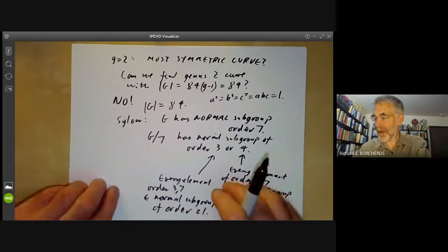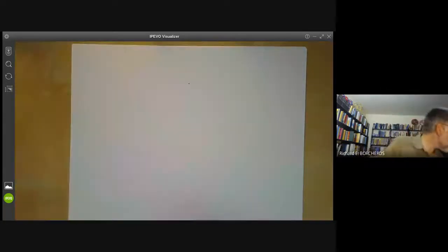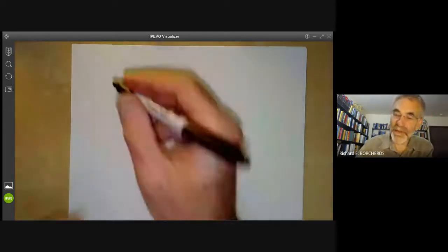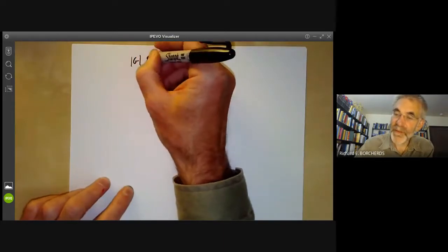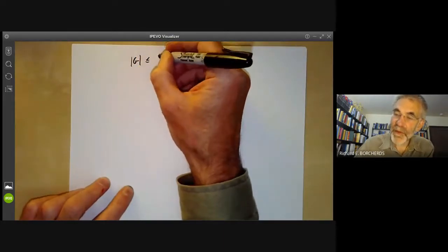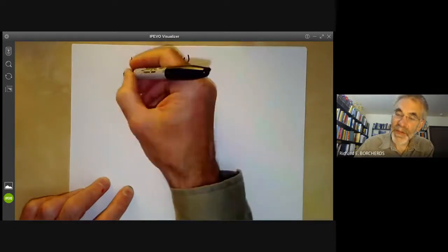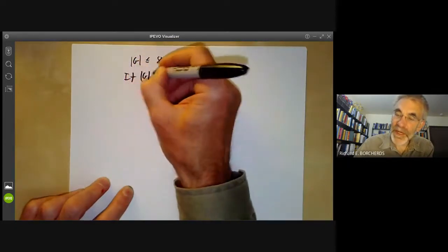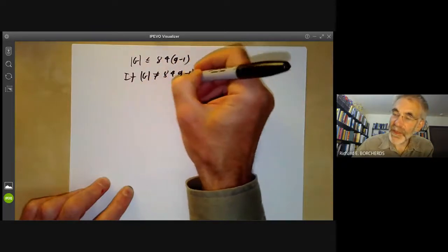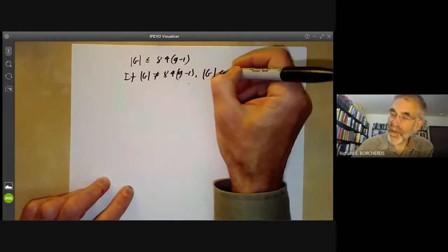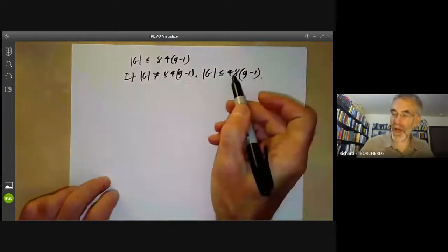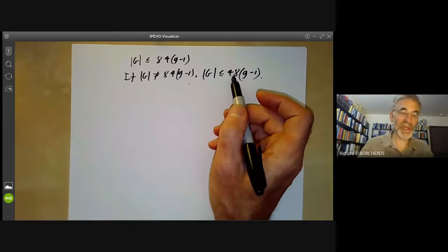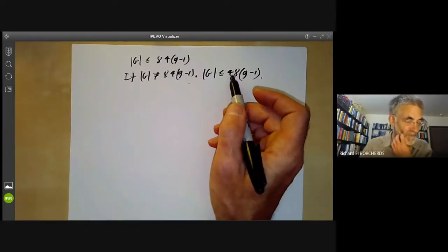Well, you remember we said that if the Hurwitz bound wasn't satisfied, so either G is at most 84 G minus one, and we pointed out that if G is not equal to 84 G minus one, then G has order at most 48 times G minus one. So the maximal possible order of a group of automorphisms of a genus two curve over the complex numbers is 48.